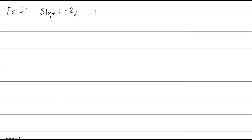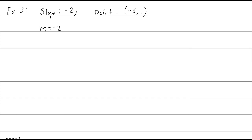Example 3 requires more work because we're given a slope of negative 2, but this time we're not given the y-intercept. We're just given a point that lies on the line: (-5, 1). I can tell it's not the y-intercept because the x-value is not 0 — it's negative 5. We can still use y = mx + b to figure this out. Slope is negative 2, so y = -2x + b.